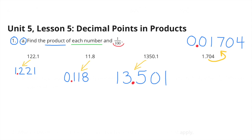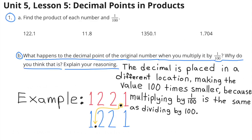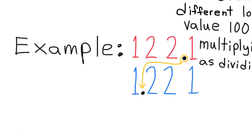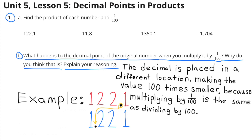Here's another look at all the products when we multiply each number times one-hundredth. Part B: What happens to the decimal point of the original number when you multiply it by one-hundredth? Why do you think that is? The decimal point is placed in a different location, making the value one hundred times smaller, because multiplying by one-hundredth is the same as dividing by one hundred. For example, one hundred twenty-two and one-tenth multiplied by one-hundredth becomes one hundred times smaller, and its new value is one and two hundred twenty-one-thousandths.